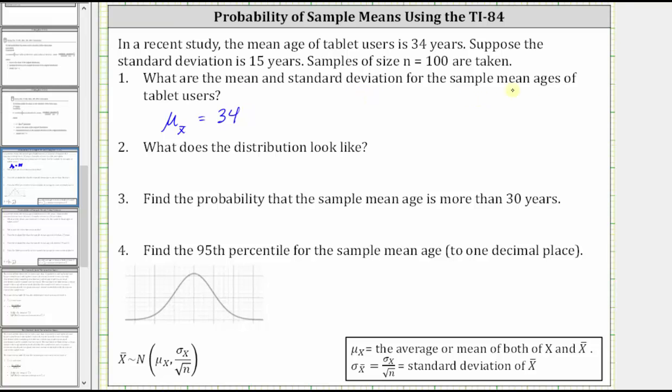And now the standard deviation for the sample means, which is indicated by σ sub x̄, is equal to σ sub x divided by the square root of n, which is the standard deviation of the population divided by the square root of the sample size. So σ sub x̄, in this case, is equal to 15, the standard deviation of the population, divided by the square root of 100, because the sample size is 100. Simplifying, we have 15 divided by 10, which is equal to 1.5. And for both the mean and standard deviation, the units are years.